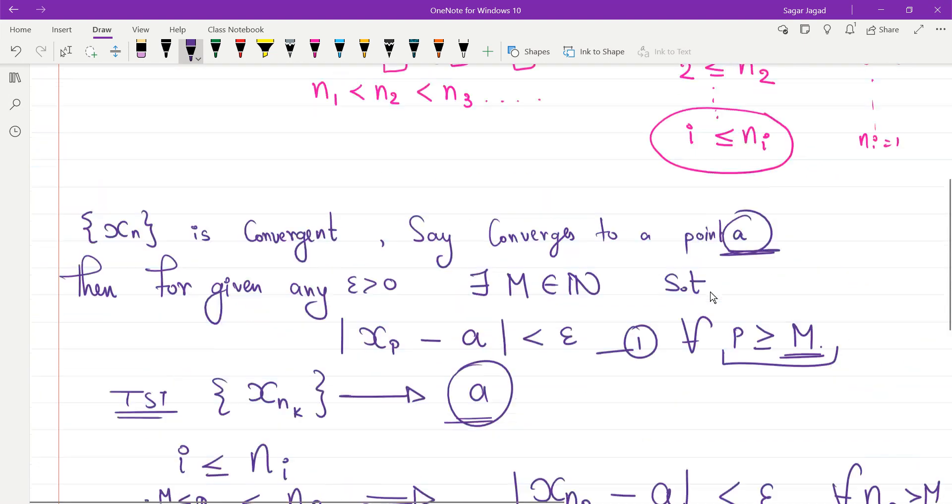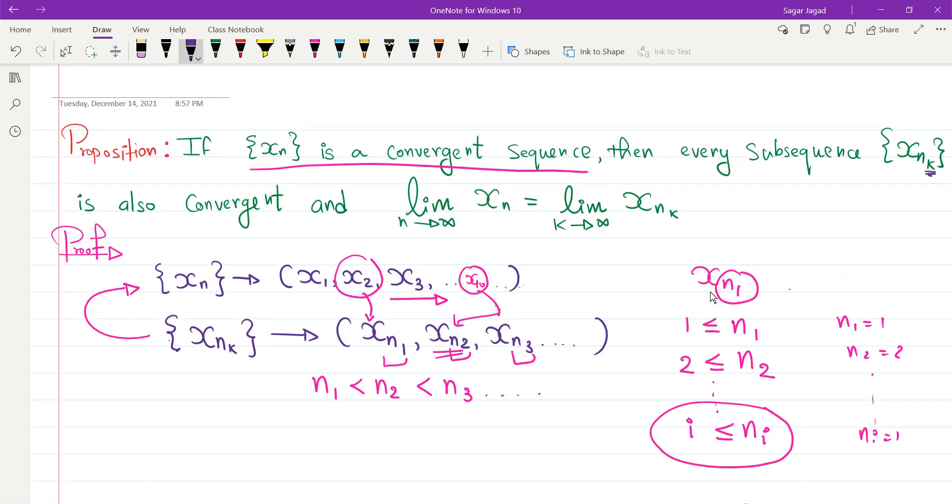It was an easy proof. What we learned is if I have a convergent sequence, every subsequence is convergent and that subsequence converges to the same point. Thank you so much for watching this video. If you like the video, please subscribe to the channel.